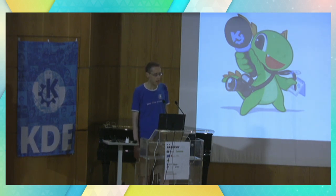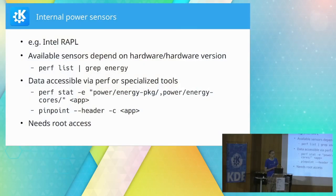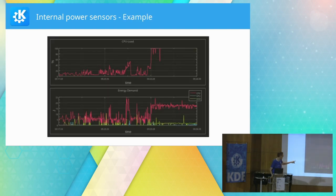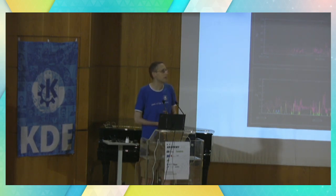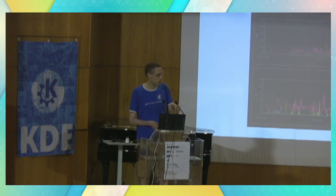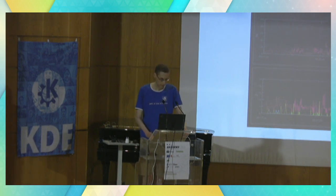Last question: this talk focused on CPU measurement — is there anything related for GPU usage? From the built-in sensors, if you have an Intel CPU with integrated GPU, that will also show up as a sensor — I think the blue line in the plot is actually GPU. For dedicated graphics cards, it depends on whether they give you access to their sensors. I'm not sure if we have that, but for integrated GPUs we do get that.